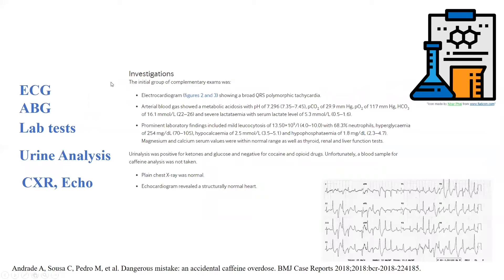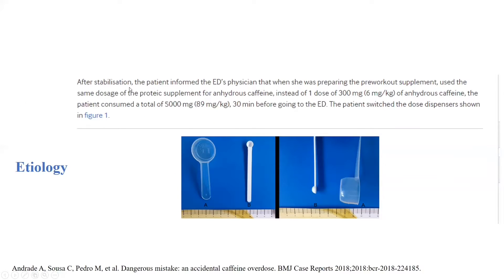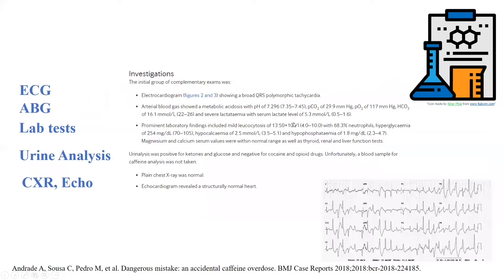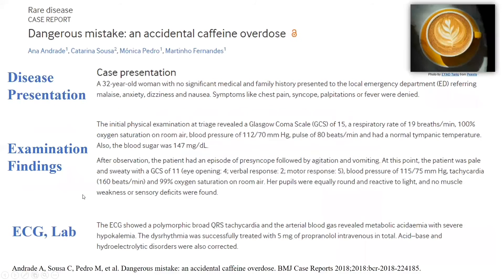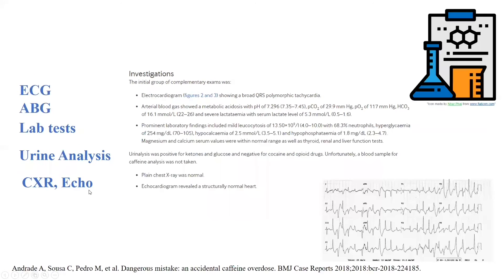It's always nice to present pictures — it helps the reader get the idea you're trying to explain. The authors then presented the ECG findings, a picture of that, ABG results, lab tests, urine analysis, x-ray, and echo. You can present these as bullet points or written text, whatever you feel comfortable with. For the outline, the items on the left are the outline — disease presentation, examination findings, and so on.